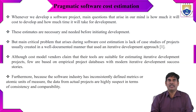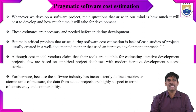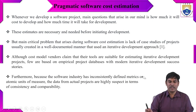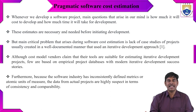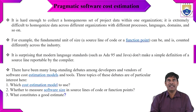The software industry has inconsistently defined metrics as atomic units of measure. Data from actual software projects are highly suspect in terms of consistency and comparability. Organizations need to define metrics or units to measure software projects for consistency and compatibility across various domains. It is very hard to collect a homogeneous set of project data within one organization, and extremely difficult across different organizations with different processes, languages, and domains.